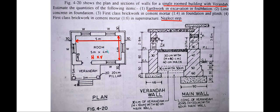The single room dimensions are 5 by 4 meters — that is the internal dimension. The length is 5 meters and the breadth is 4 meters. For the veranda, the internal distance between pillars is 3 meters, and the pillar size is 20 by 20 centimeters.